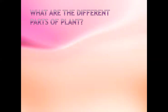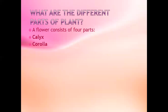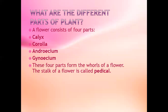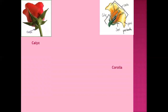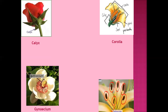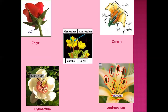What are the different parts of a flower? A flower consists of four parts. These four parts form the walls of a flower. The stalk of a flower is called the pedicel. The swollen portion at the base of the flower is known as the thalamus — it is the part of the flower to which all the floral parts are attached. Here you can see an image showing the calyx, corolla, androecium, and gynoecium all together.